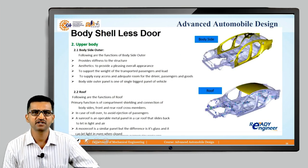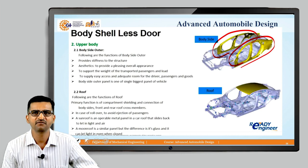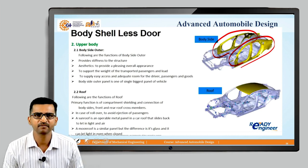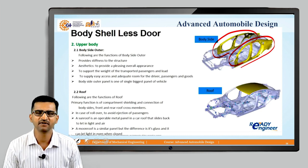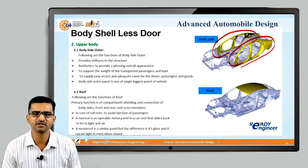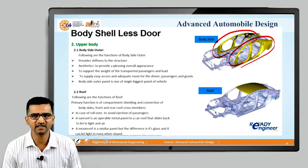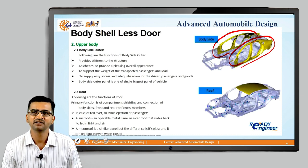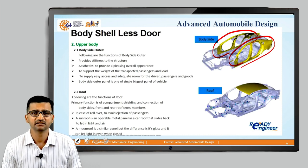Now, looking at the upper body structure — body side outer. You can see this is the outer structure. The function of the body side outer is aesthetics, and it also provides stiffness because the weight of the car and passengers is being transmitted and the body side outer takes part in that load transmission. These are also the members which protect the car in case of rear side or side impact accidents.